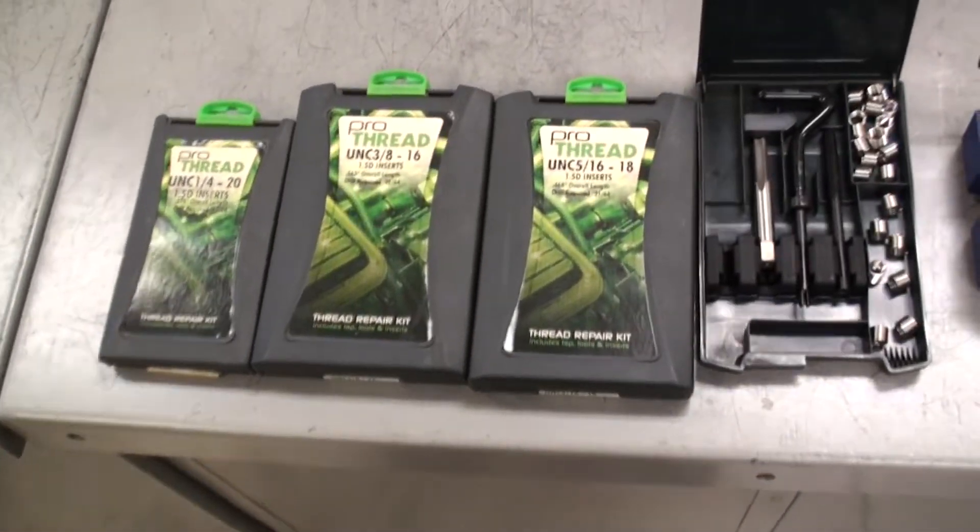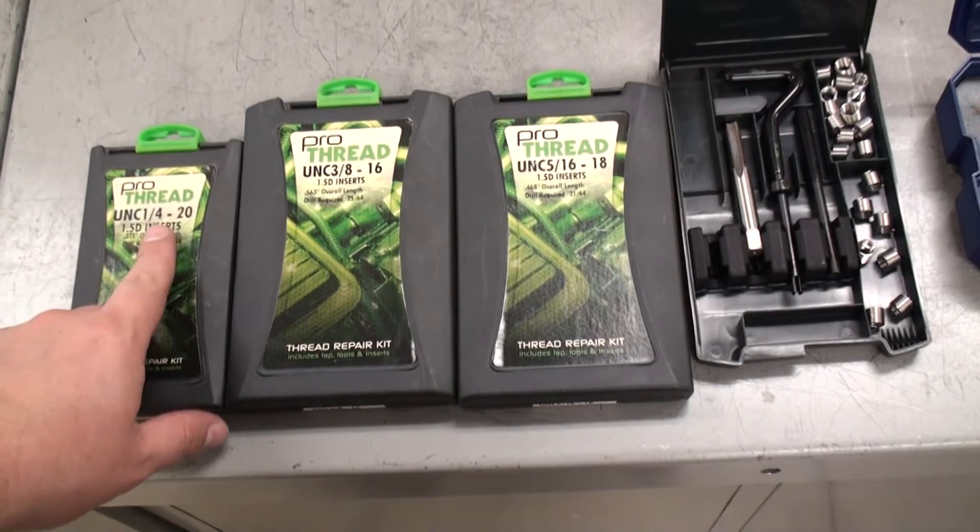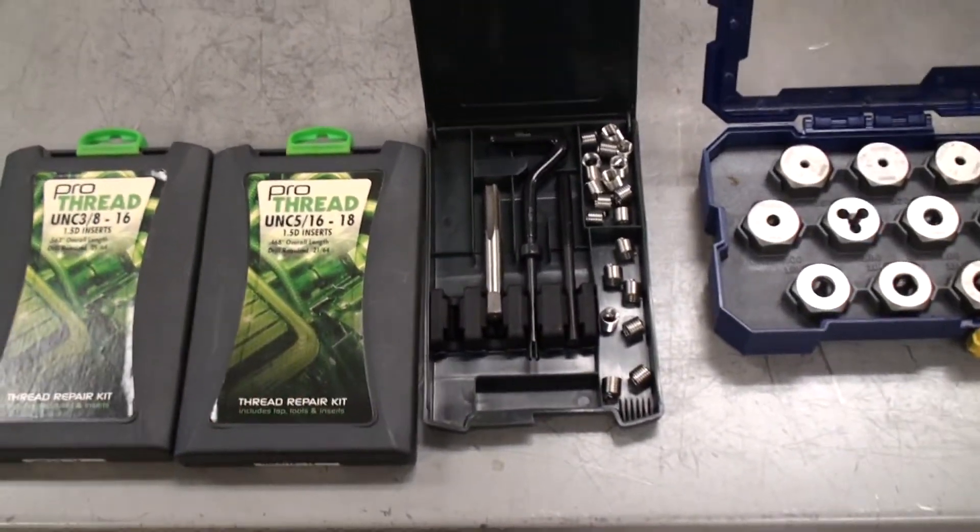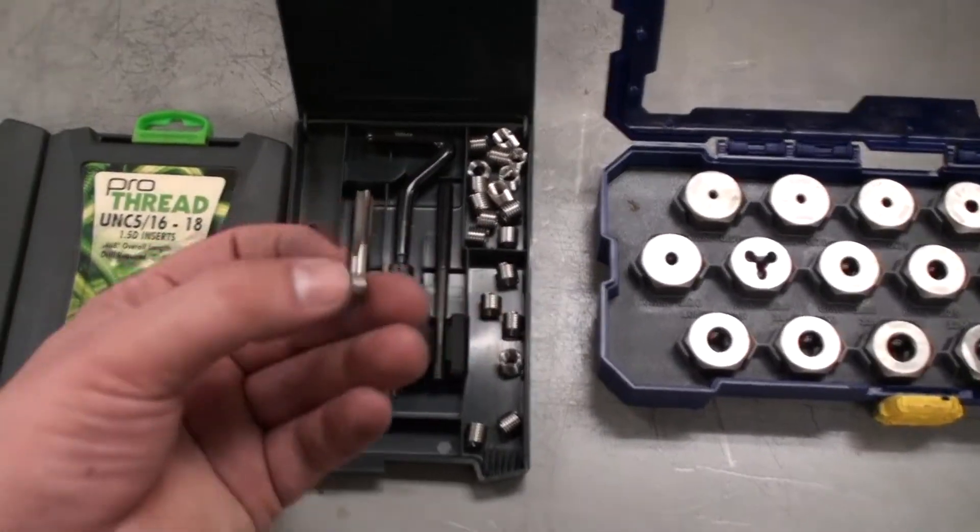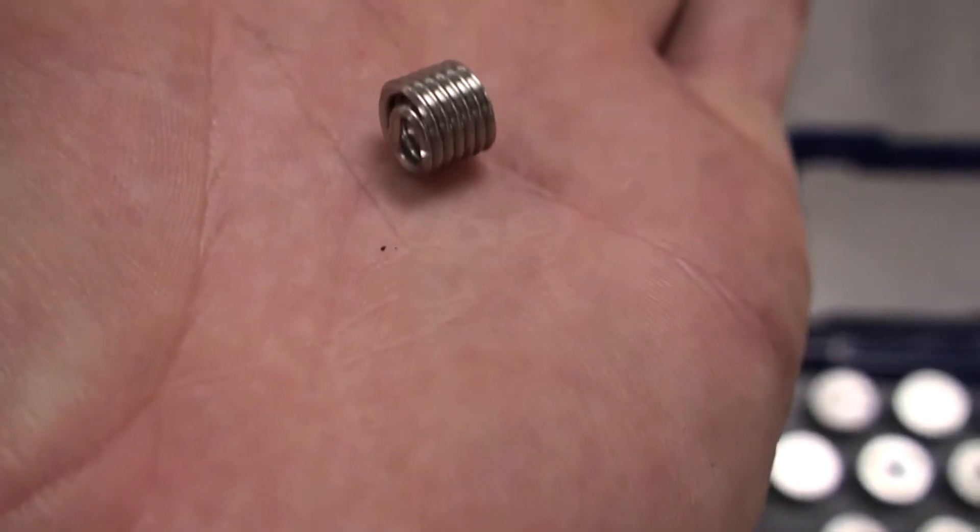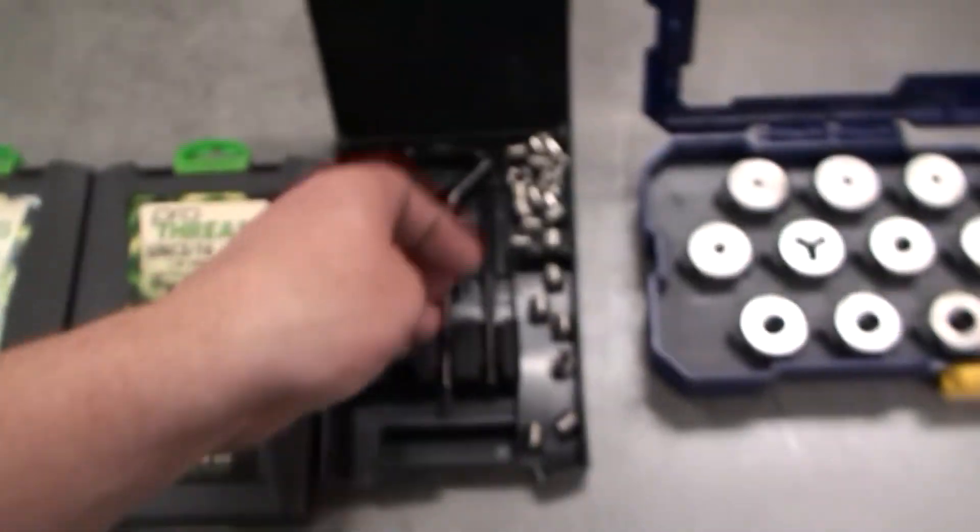To start, here you can see I have a few kits, and these are something you might recognize from the motorcycle thread repair video. These kits come with the tap, its own set of small tools, and these neat little thread inserts so you can completely replace threads without changing the inside diameter.